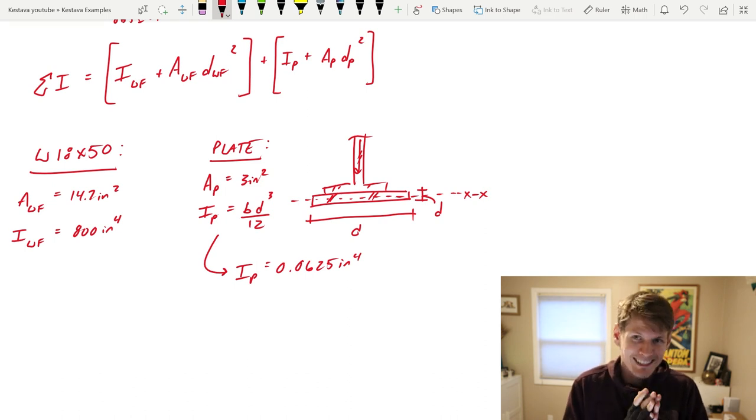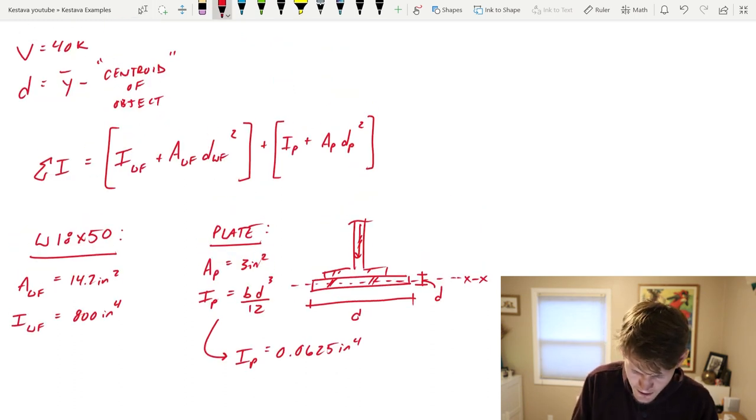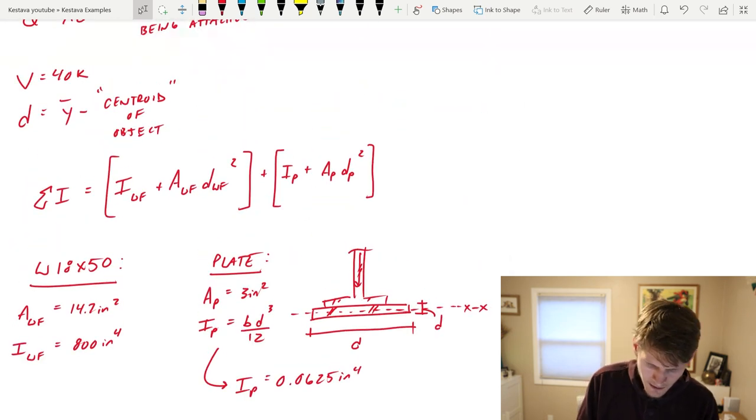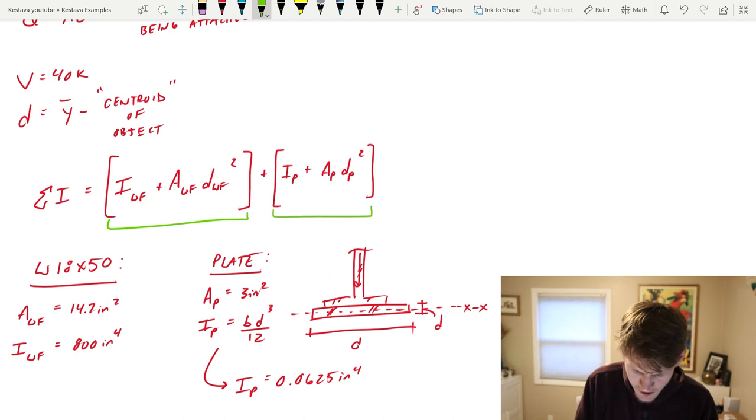The moment of inertia itself basically can be ignored. But there's another component as we know up above in this equation to the full equation. So don't count it out yet. All right I think that gives us everything. Now we need to find our d component of each one of our portions, our wide flange portion and our plate portion.